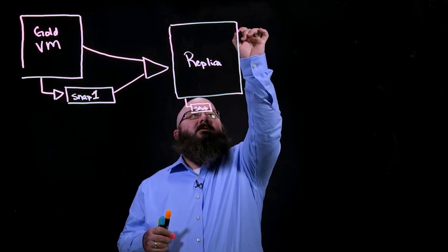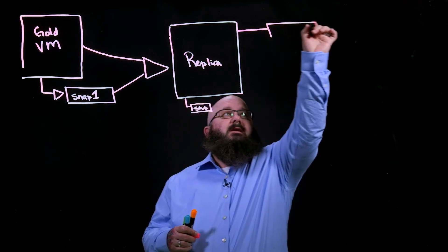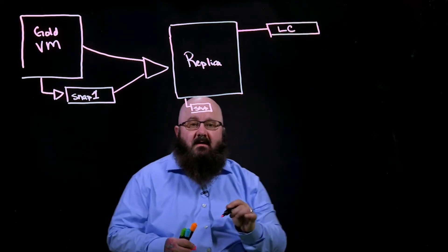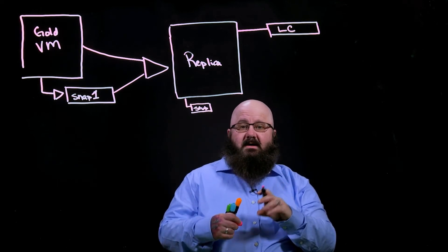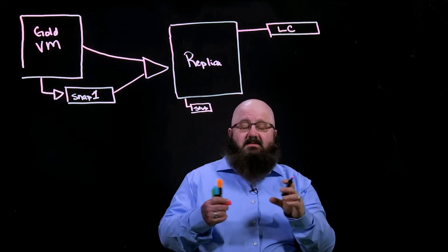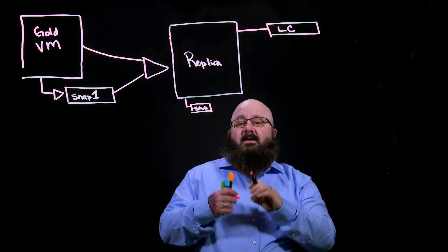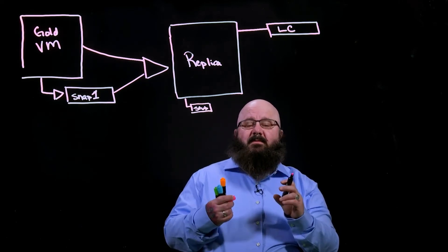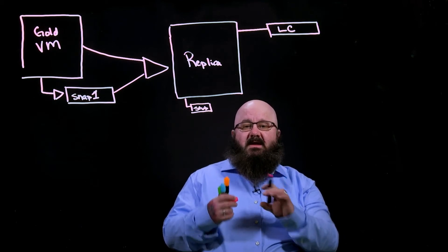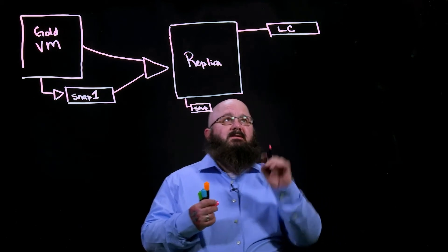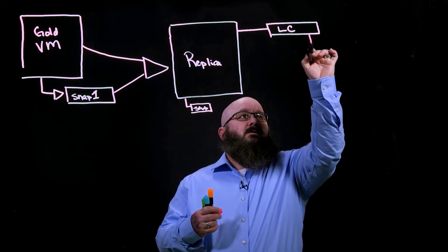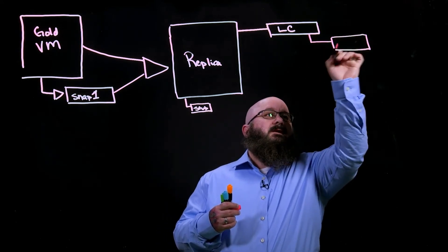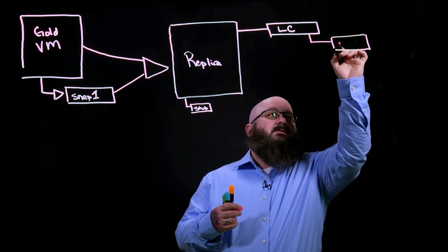So now we'll build our link clones. We start off with a link clone state of the environment. We'll build it out according to whatever the requirements are, and this includes any customization, like quick prep or sys prep. Once it's finished that and done the customization, it'll then create what you might call the active state or the user state.